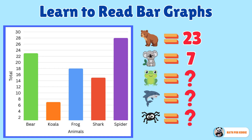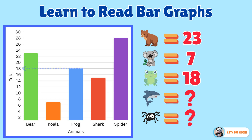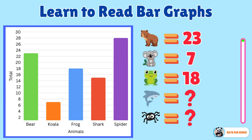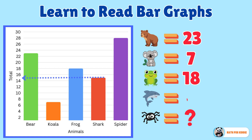Next one. How many frogs are there? 18. You nailed it. How many sharks are there? It is 15. Perfect answer.